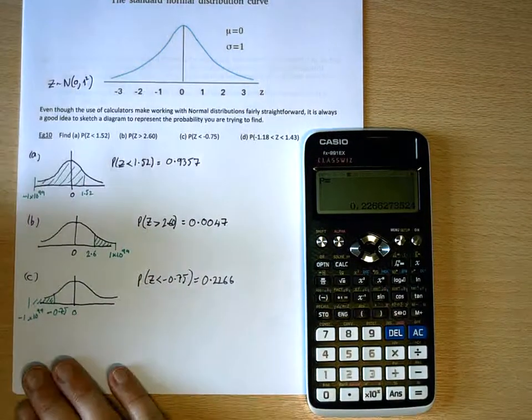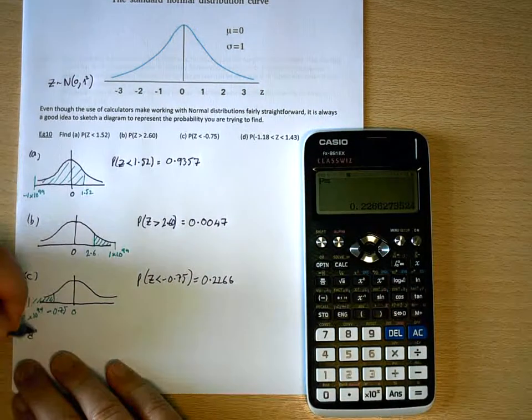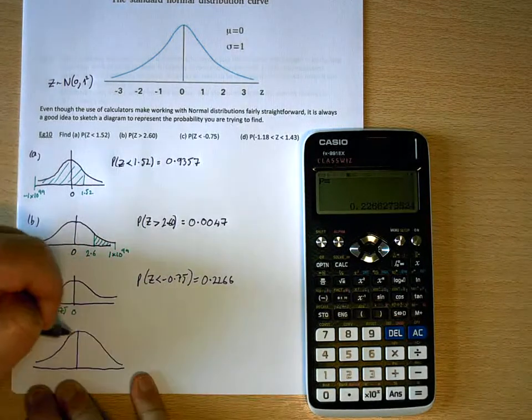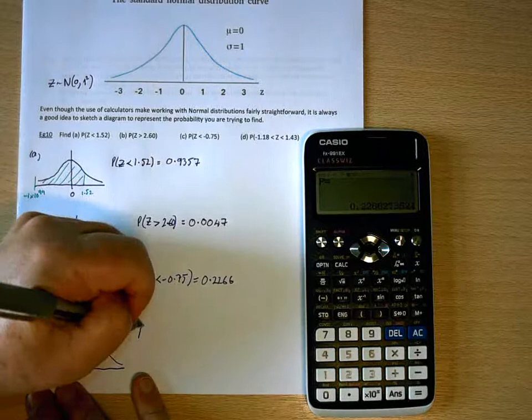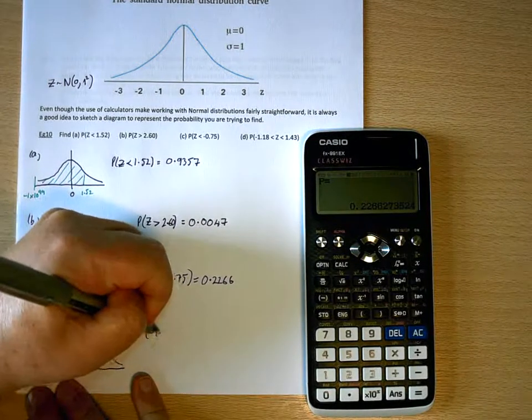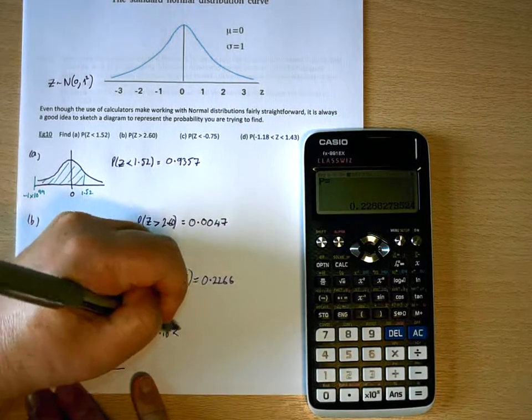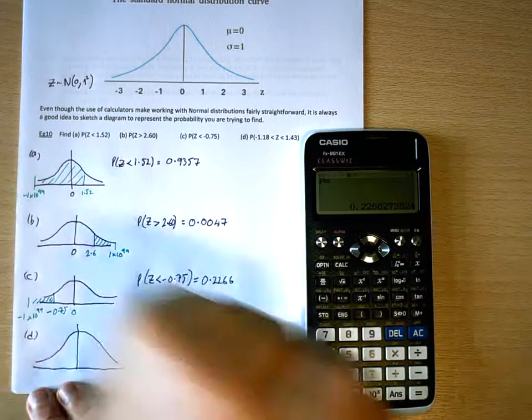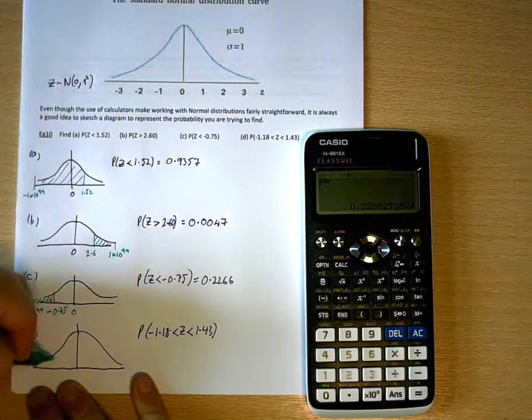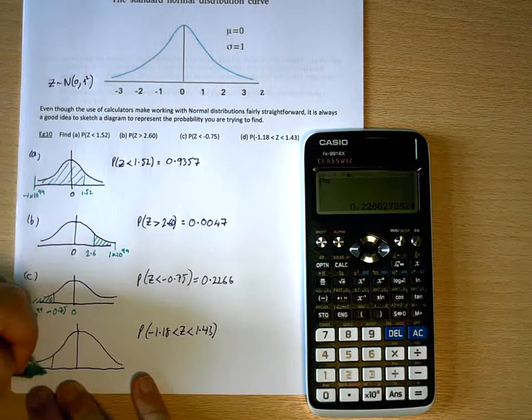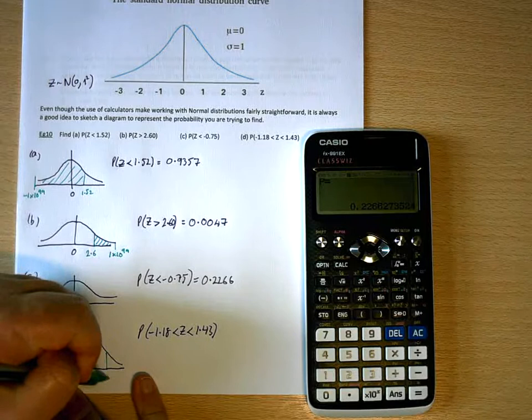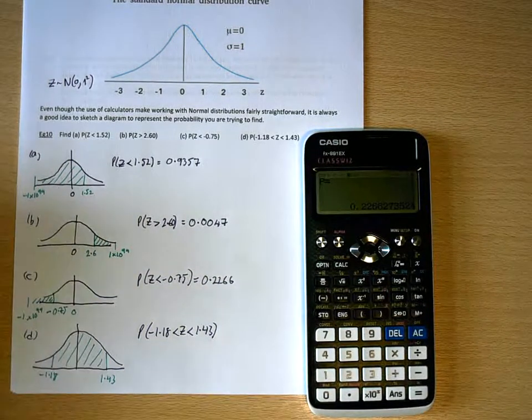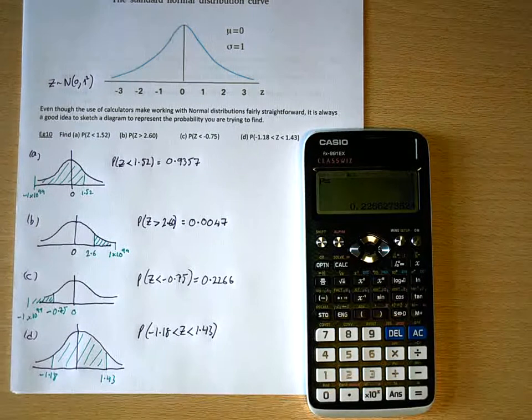And then finally, D. We're looking for the probability that Z is between 1.18 and 1.43. So on my curve now, I'm looking for minus 1.18, 1.43. So this is the area that I'm interested in working out.